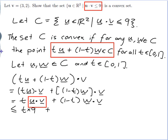And what about w dot v? Well w is in my set as well so this is still true even if I have w instead of u. So w dot v is less than or equal to 9 and this (1-t) is positive because t is less than 1.